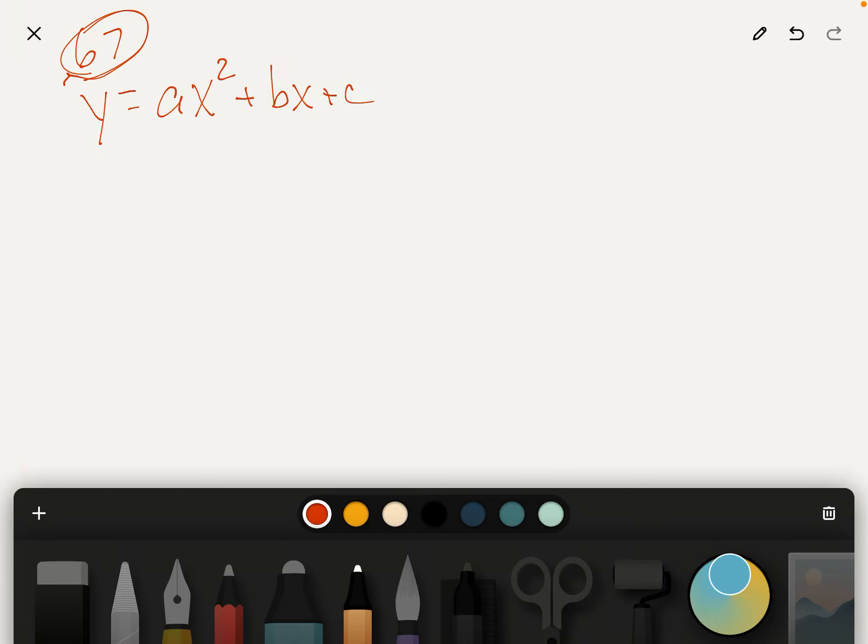Okay, so here's problem 67. They give you an equation for a parabola, and they're going to basically want you to find A, B, and C.